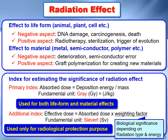Next, we would like to explain about radiation effects. You may feel that radiation is harmful to life forms — it is true, but only one aspect. Radiation affects life forms and materials in both negative and positive ways. Negative aspects to life forms include DNA damage, carcinogenesis, and even death, while positive aspects include radiotherapy, sterilization, and triggering evolution. For materials, negative aspects include deterioration and semiconductor errors, while positive aspects include graft polymerization for creating new materials.